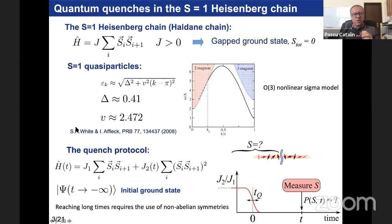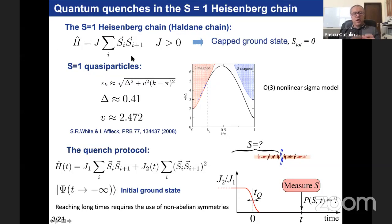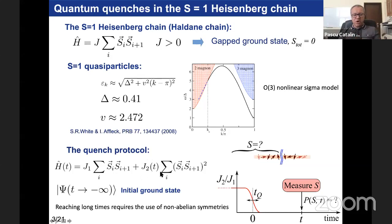This is a relatively well-studied model. The ground state and quasi-particle spectrum, including the gap, were thoroughly investigated by White and Affleck using the DMRG approach. This serves as our final Hamiltonian after the quench. The quench protocol uses a time-dependent Hamiltonian consisting of two terms: the final Heisenberg term and a bi-quadratic term. We switch off J2 at t=0 over a switching time Tq. If Tq shrinks to zero, you have a sudden quench; if Tq is finite, you have a smoother quench.